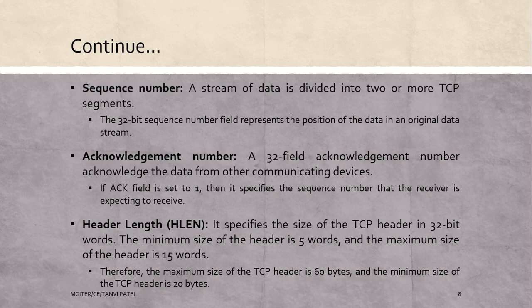Next is header length, also called HLEN. It specifies the size of the TCP header. The minimum size of the header is 5 words and the maximum size is 15 words in 32-bit units. Therefore, the maximum size of the TCP header is 60 bytes and the minimum size is 20 bytes.